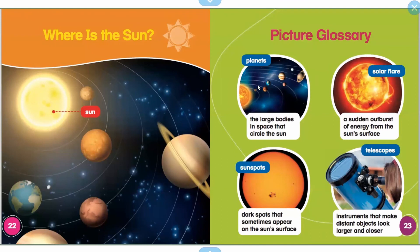So let's go over some of the things we read about in our picture glossary. Planets. Planets are the large bodies in space that circle the sun. A sudden outburst of energy from the sun's surface is called a solar flare. Dark spots that sometimes appear on the sun's surface are called sunspots.